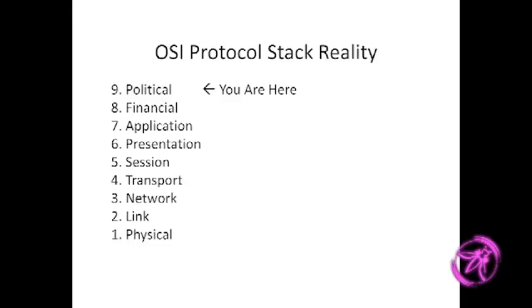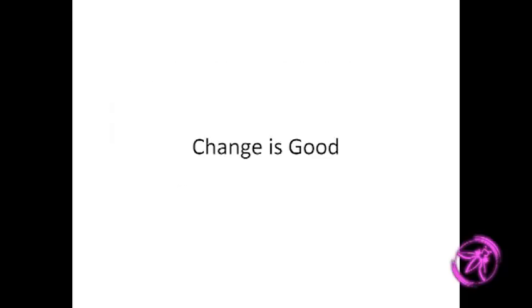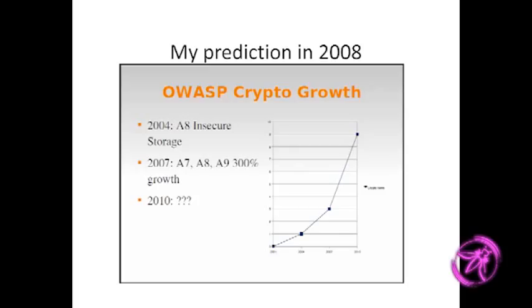Change is good. I originally did this presentation in 2008 for the Twin Cities local OWASP chapter. In 2004 there was only one crypto item in the OWASP Top 10; in 2007 there were three — 300% growth. I predicted maybe in 2010 there'd be nine crypto-related items in the top ten. Fortunately that did not actually happen, sort of.